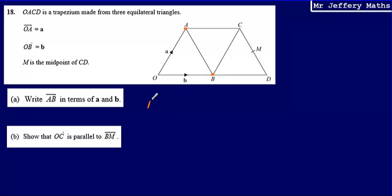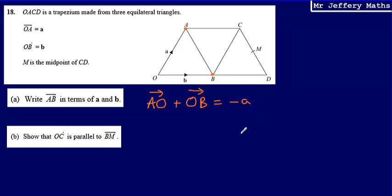So I'm going to go from A to O and then from O to B. The vector A to O: since O to A is described as a, going in the reverse direction gives negative a. And then from O to B, that's described as b. So AB is negative a plus b. That's part A done.